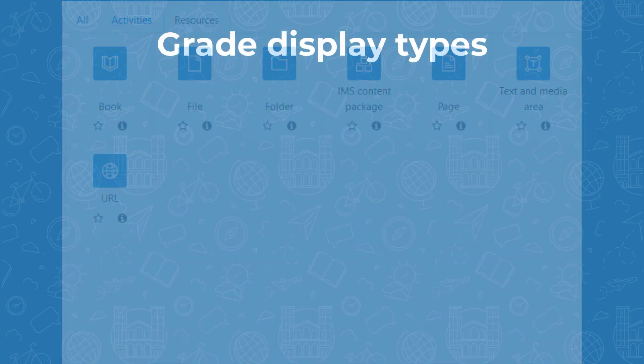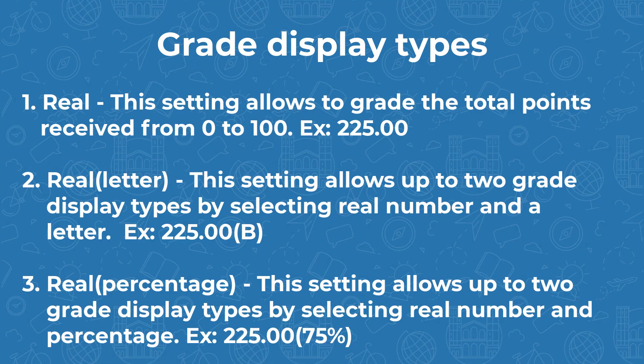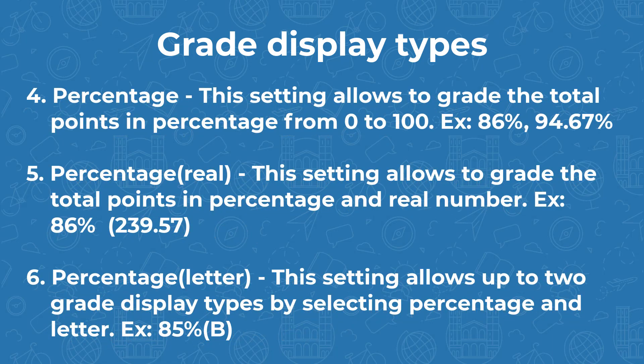There are nine grade display types. Real: grades the total points received from 0 to 100, example 225.00. Real with Letter: displays up to two grade types — real number and a letter, example 225.00 with a B. Real with Percentage: displays real number and percentage, example 225.00 with 75%. Percentage: grades total points as a percentage from 0 to 100, example 86% or 94.67%. Percentage with Real: displays total points in percentage and real number, example 86% with 203.00.